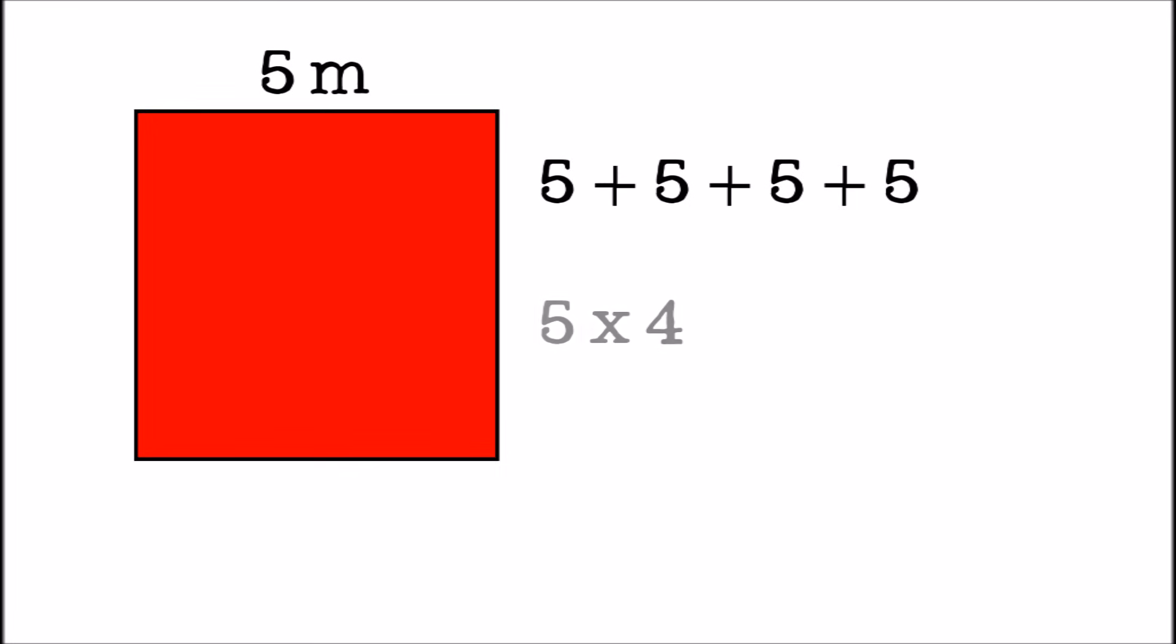Or, we could use multiplication as a shortcut. Either way, the answer is the same. Five times four equals twenty, and the perimeter of this square is twenty meters.